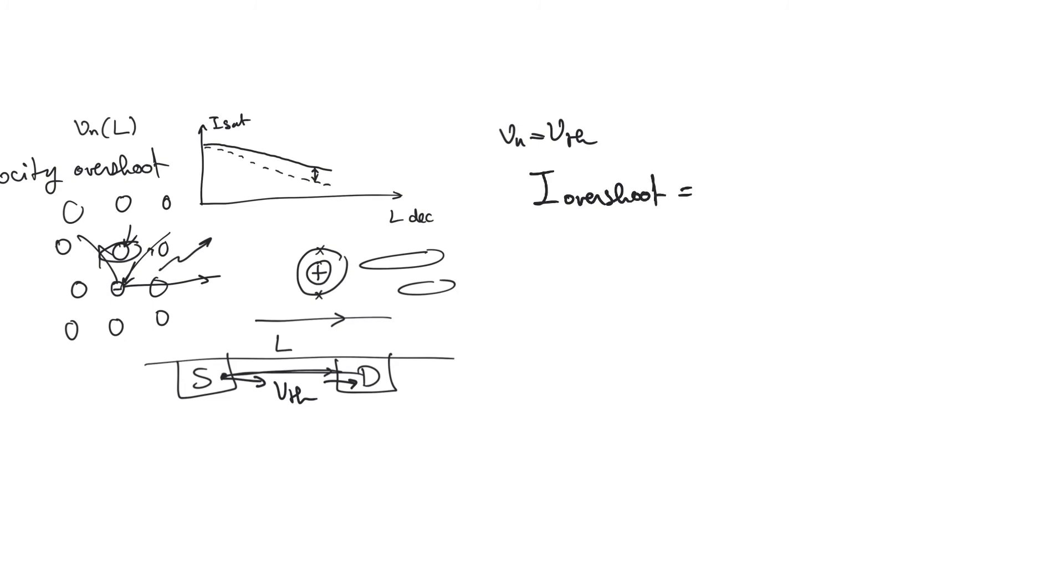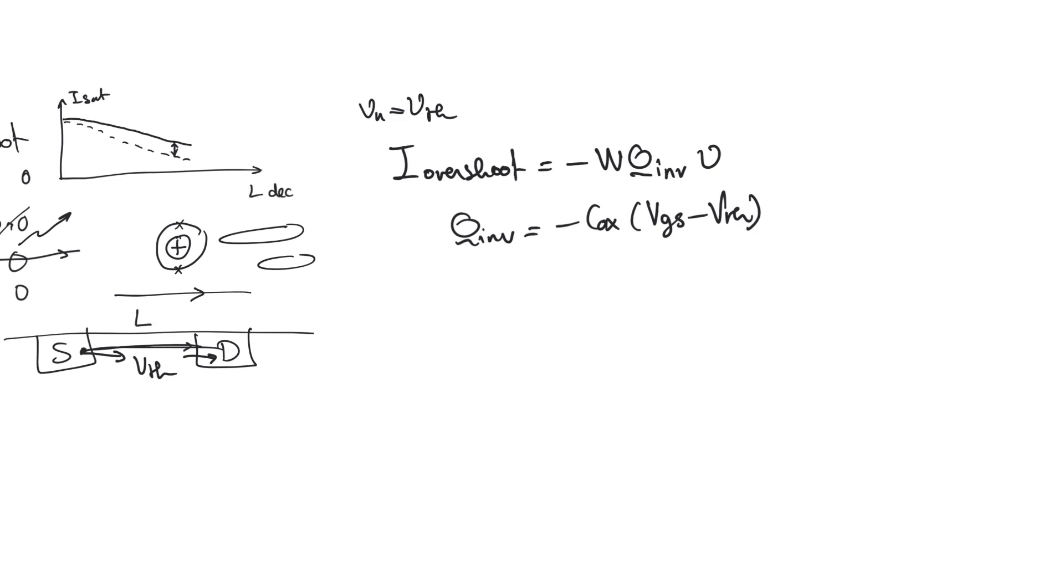So what's the expression of current in this case? We call this overshoot current. Any current through the channel is going to be minus W times Q, the inversion charge, times the velocity at which the charge moves. So inversion charge more or less doesn't change. It's minus Cox times VGS minus V threshold. This is the amount of charge coupled to the channel through the gate capacitance. And so the saturation current in this case is going to be Cox times VGS minus V threshold, and W is also going to figure here.